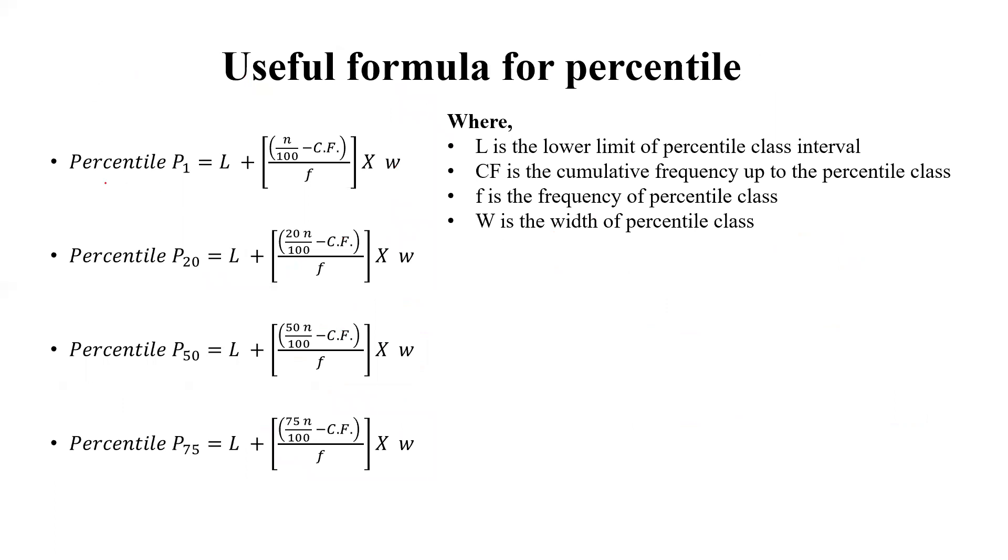If we are going to calculate P1, first percentile, we'll use this formula. For 20th percentile, we'll use this formula. If we calculate 50th percentile, we'll use this formula. If we calculate P27th percentile, we'll use this formula. Where L is the lower limit of the percentile class interval, CF is the cumulative frequency up to the percentile class, F is the frequency of percentile class, W is the width of the percentile class.